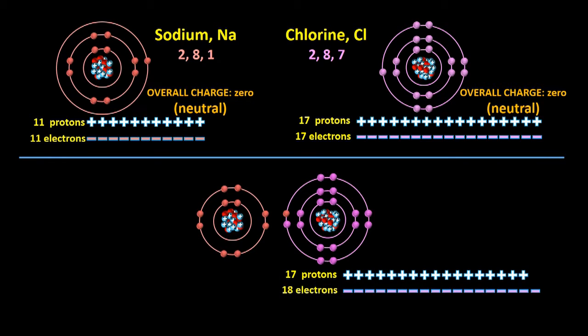Now the Cl atom still has 17 positively charged protons, but has 18 negatively charged electrons, so it has an overall charge of 1 minus. Mathematically, combining 17 plus and 18 minus gives 1 minus. It's still an atom, but because it's now charged, it's called an ion.